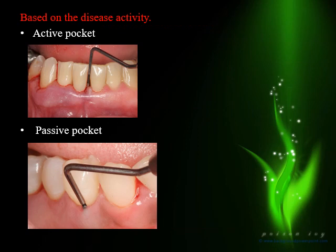Classification summary so far: First — gingival pocket, periodontal pocket, and combined pocket based on whether attachment is lost. Second — suprabony pocket and intrabony pocket based on the relationship of the base of the pocket to the bone. Third — simple, compound, or complex based on how many surfaces of the tooth are involved by the pocket.